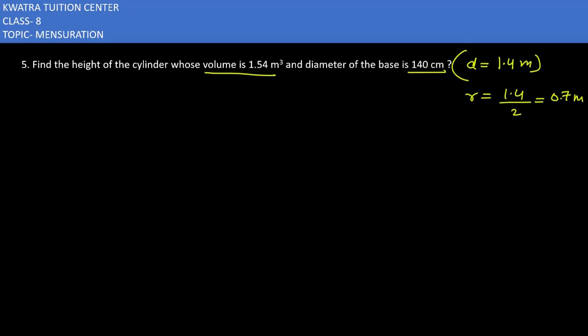Now you have to find the height of the cylinder. The volume of cylinder is equal to pi r squared h. The volume of cylinder is 1.54, pi is 22 by 7, r is 0.7 mentioned two times, and h is what we need to find.